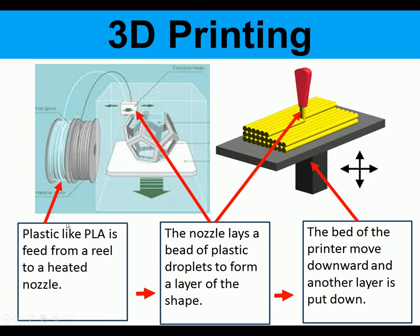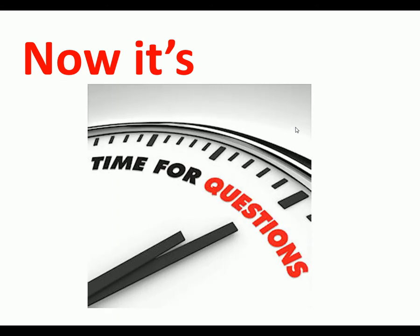How does 3D printing work? Plastic such as PLA is on a reel. It is fed into a heated nozzle. The nozzle lays down beads of plastic and these layers are built up. As each layer is laid down, the bed moves downwards for the next layer. Each layer adheres or sticks to the one above it. And that's how 3D printing works.